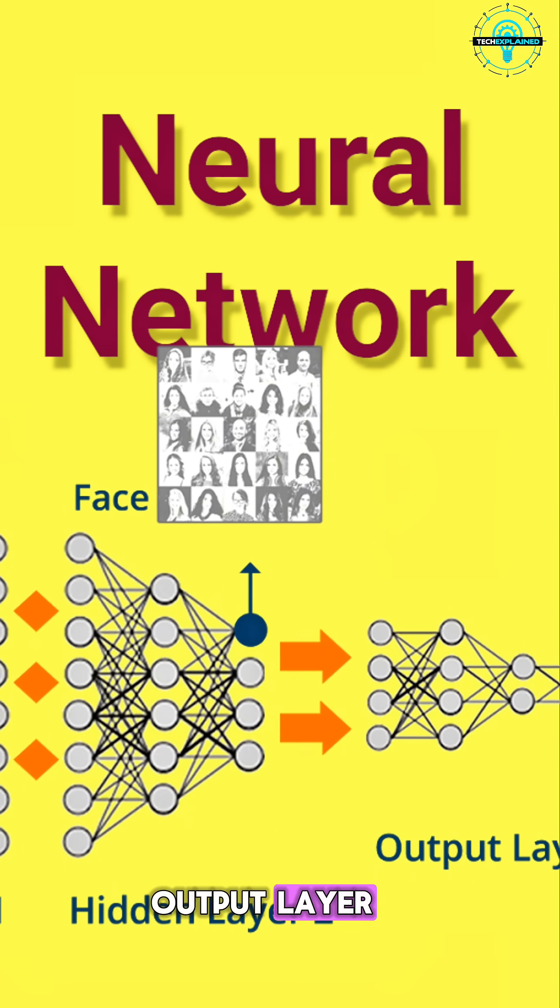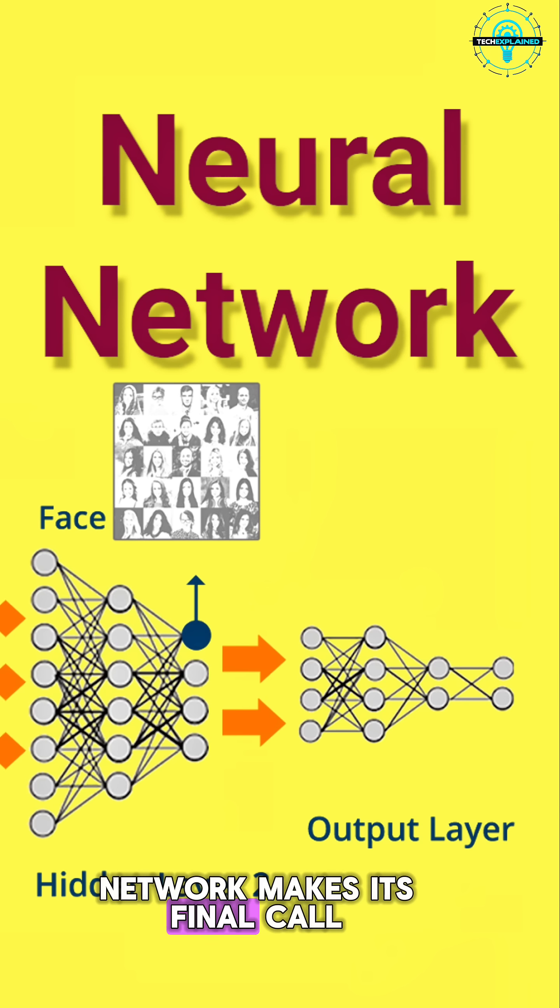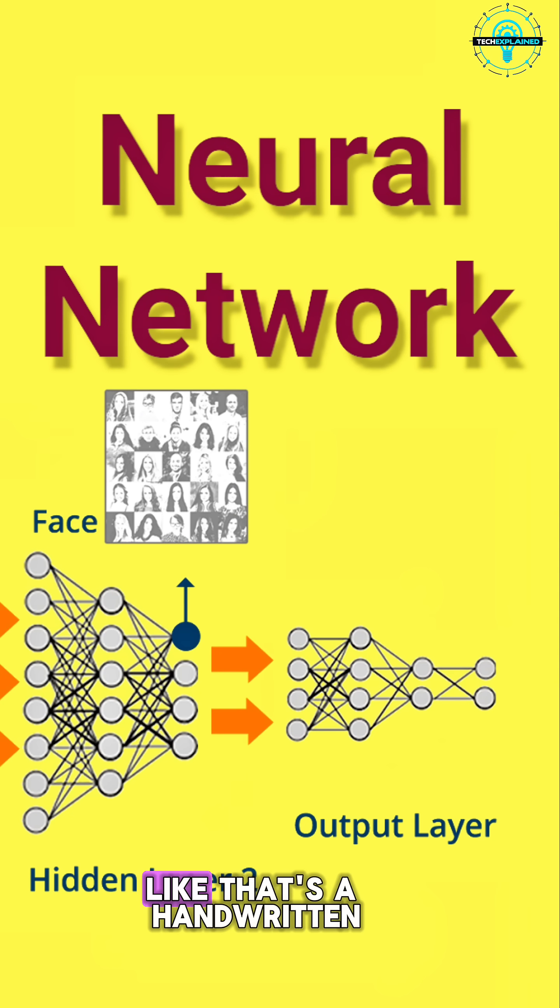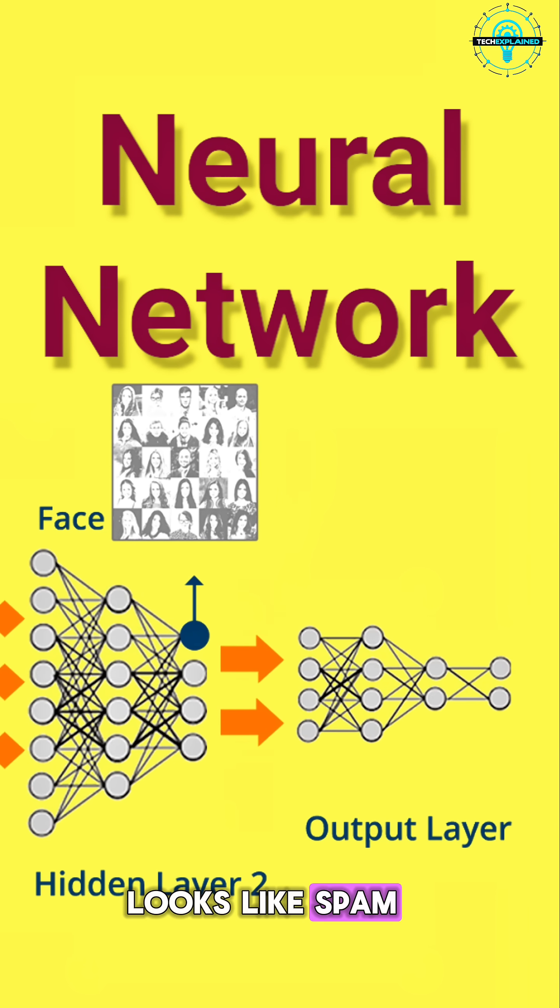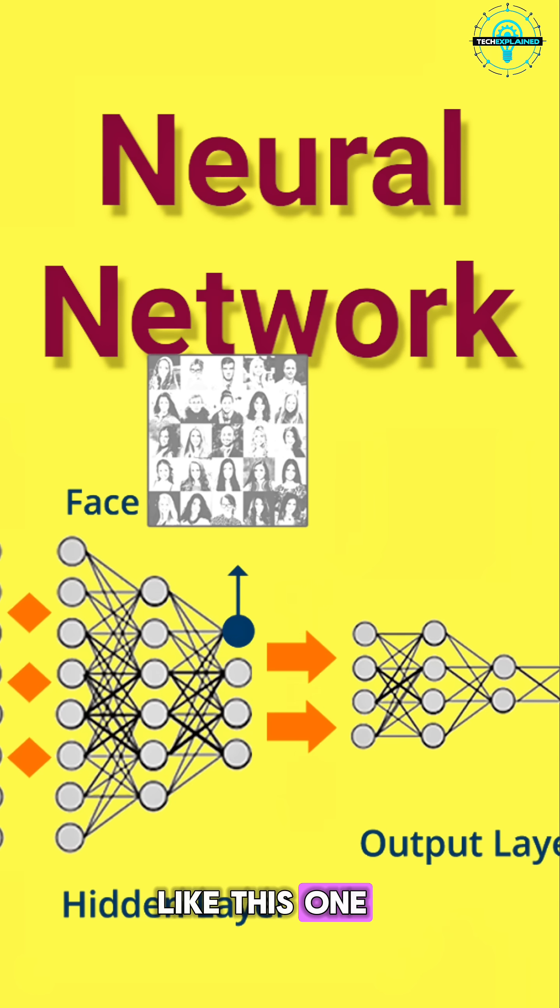Finally, we hit the output layer. This is where the network makes its final call. Like, that's a handwritten five. Or, this email looks like spam. Or, play more songs like this one.